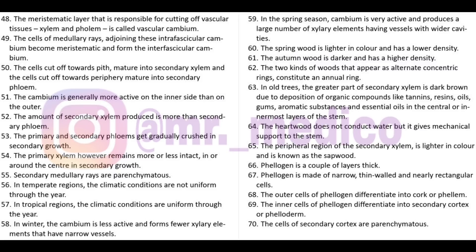Cambium is generally more active on the inner side due to hormonal changes, so more secondary xylem is produced than secondary phloem. Primary and secondary phloem gets crushed during secondary growth. However, primary xylem remains more or less intact in the center. Secondary medullary rays are parenchymatous.